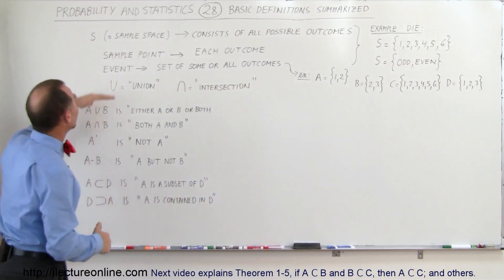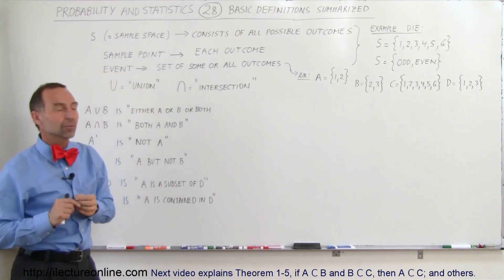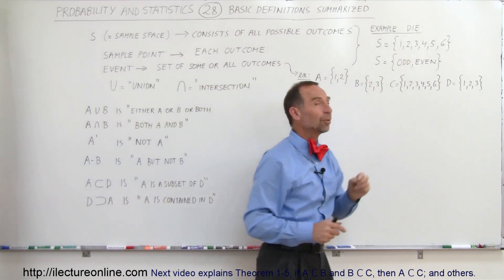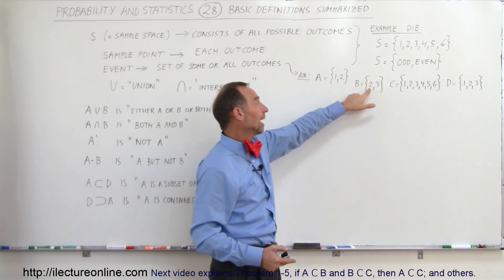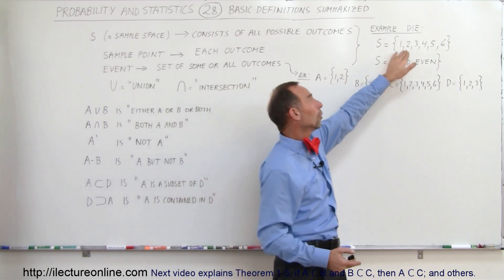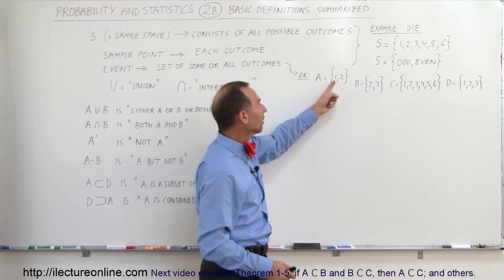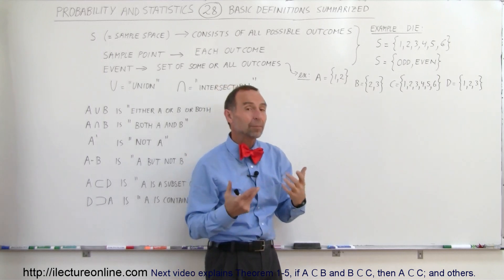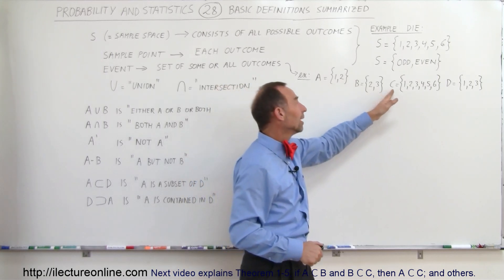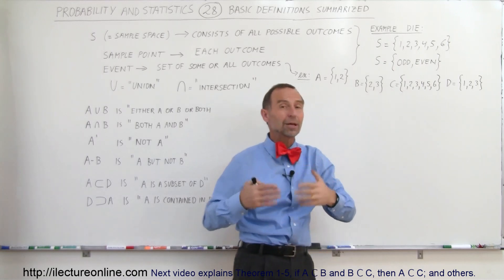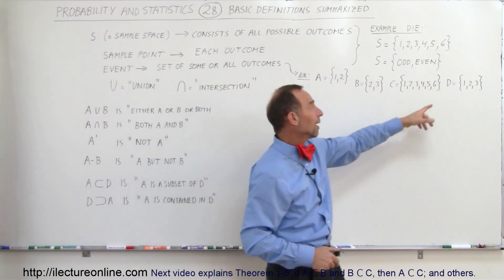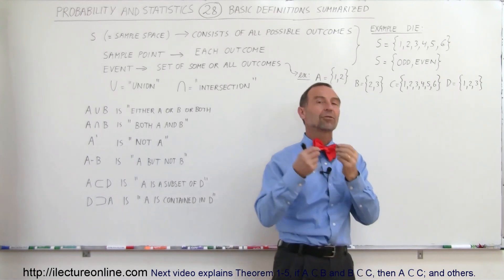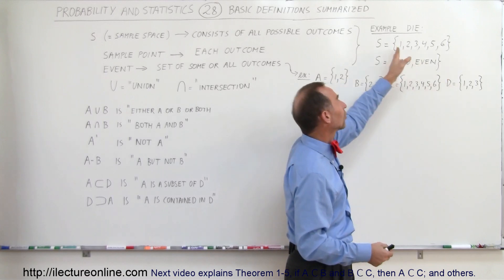An event is a set of some or all of the outcomes. For example, event A has two outcomes: one and two, and one and two are part of the sample space. Event B has outcomes two and three, which are also part of the sample space. Notice that two is common between the two events — there can be an overlap. Here's another event containing outcomes one, two, three, four, five, six — all the outcomes of the sample space. And event D has outcomes one, two, three — the first three outcomes of the sample space.